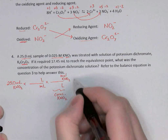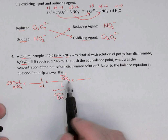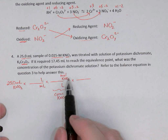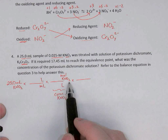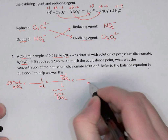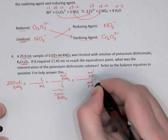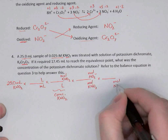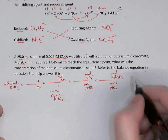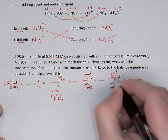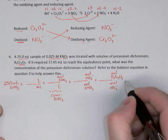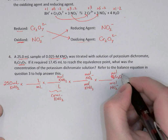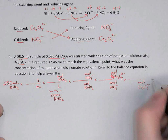I'll get rid of moles of KNO2 and switch to moles of NO2 minus, because that's what appears in the balanced equation. Then, using the balanced equation, I'll switch from moles of NO2 minus to moles of dichromate, and then from moles of dichromate to moles of potassium dichromate. Now I've got moles of potassium dichromate.